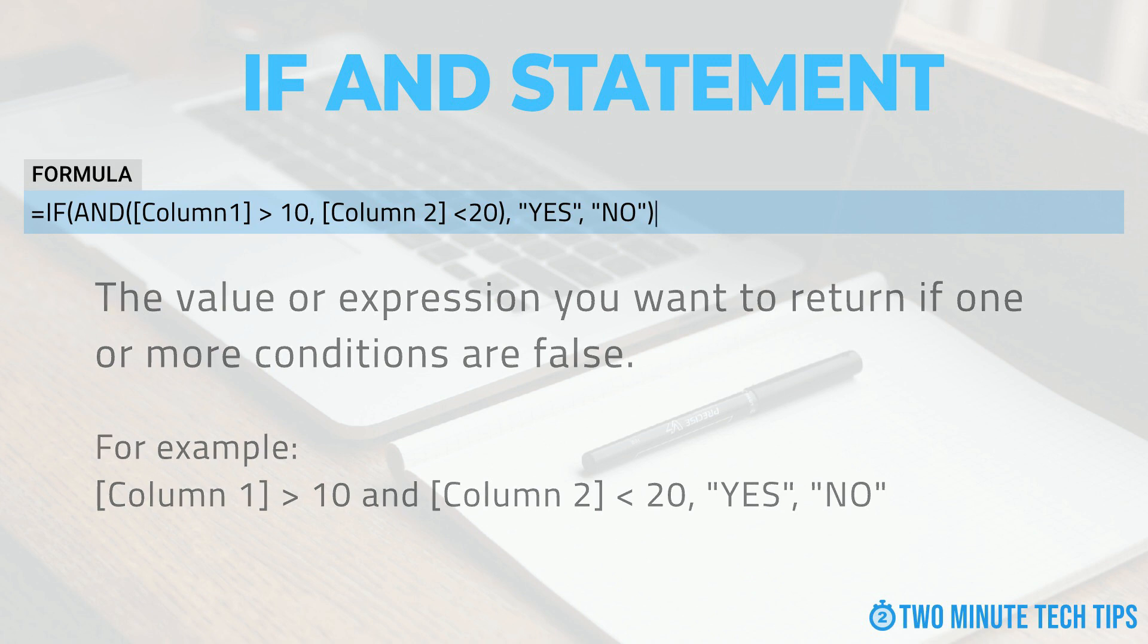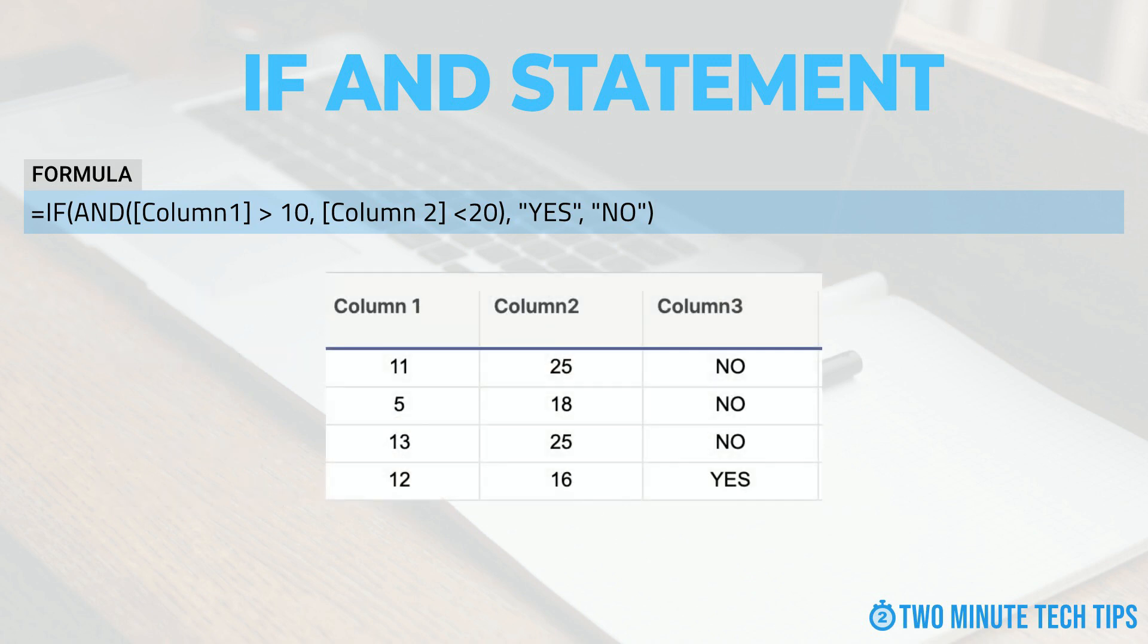Here is an example that tests for the following conditions: Column 1 greater than 10 and Column 2 less than 20. If both conditions are true, we will return a value of 'YES'. If one or more conditions are false, we will return a value of 'NO'.